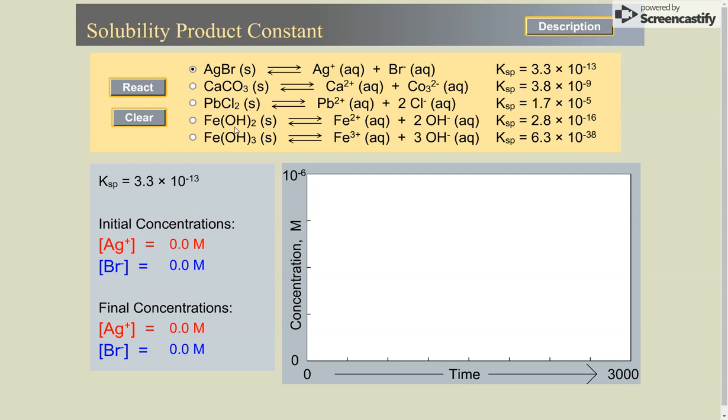Lead chloride and iron hydroxide are AB2 salts. So we cannot compare the KS values with the first two, but we can compare them between each other.